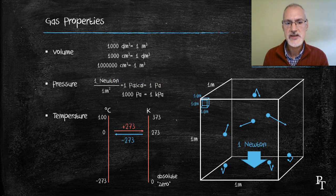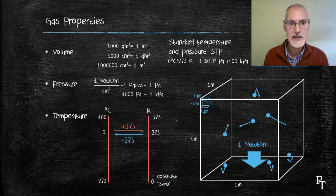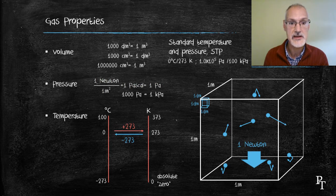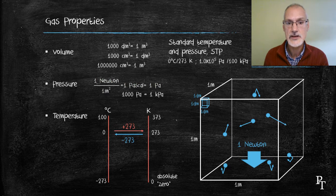We often refer to what are called standard temperature and pressure. Standard temperature is considered to be zero degrees Celsius or 273 Kelvin. And standard pressure, 100 kilopascals or 1 times 10 to the fifth pascals.